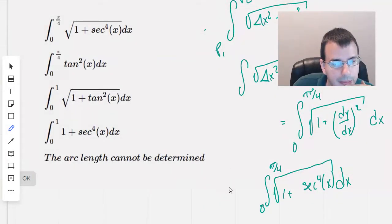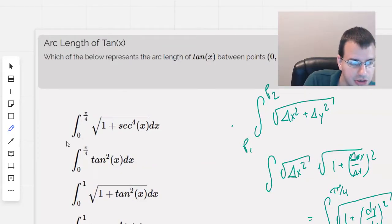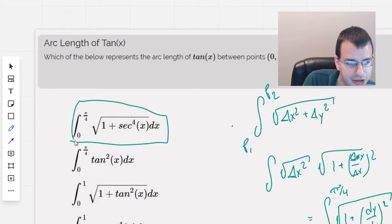So what we've got here is a possibility. 0 to π/4, 1 plus secant to the fourth of x dx. Okay, that looks pretty good. So it is this one, right here, the top one.